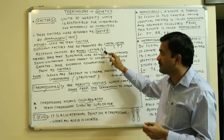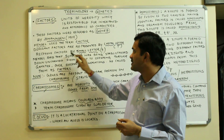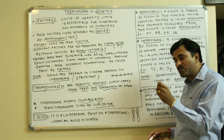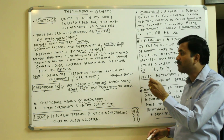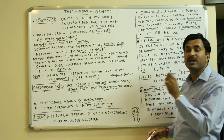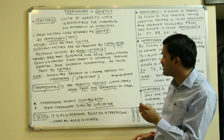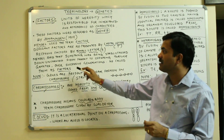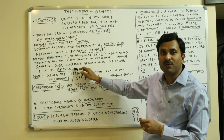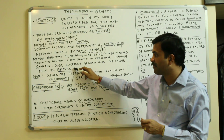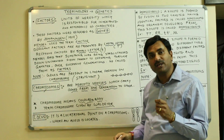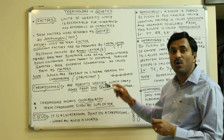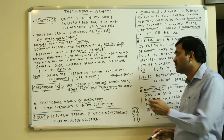The tall factor is represented by capital T and the dwarf factor is represented by small t. Mendel also said that something was being steadily passed down unchanged from parents to offspring through the gametes over successive generations, and he called these things factors, which were later called genes.